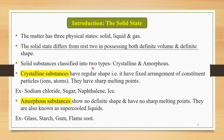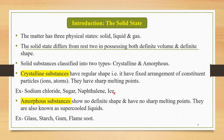Solid substances are classified into two types: crystalline solids and amorphous solids. Crystalline substances have a regular shape — a fixed arrangement of constituent particles, which may be ions or atoms — and they have sharp melting points. Common examples of crystalline substances are sodium chloride, sugar, naphthalene, and ice.